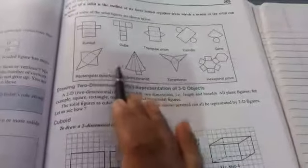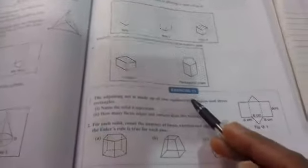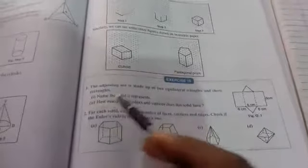You can see here the net of a cube, net of a triangular prism, net of a cylinder, net of a cone. Now it must be practiced at your home with the help of paper cutting and folding. In the next video we are going to solve the exercise. That's all for the video. Thank you.